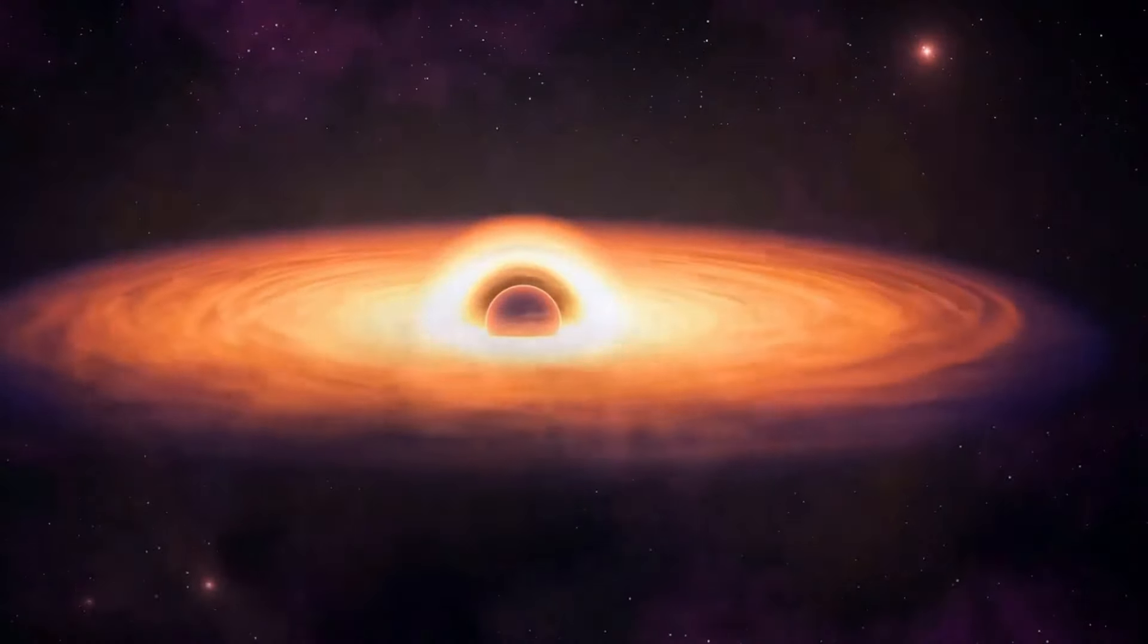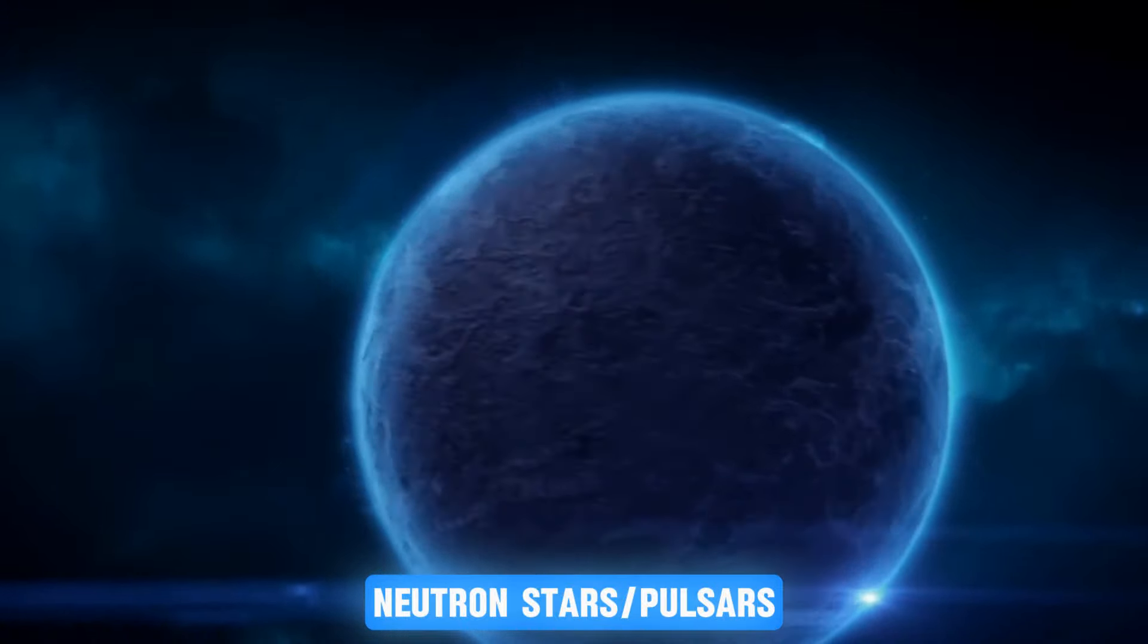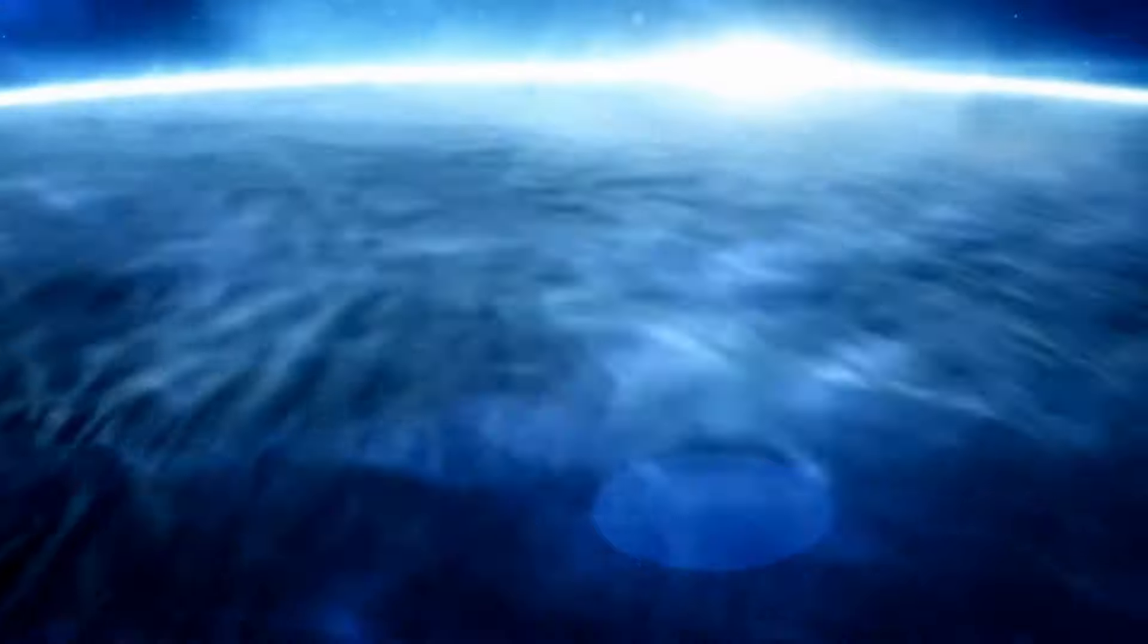So what's left of these stars is the core of neutron matter, spinning thousands of times per second. These bodies are called neutron stars or pulsars. A neutron star has a mass similar to that of a small star, squeezed into a tiny body just a few kilometers across.